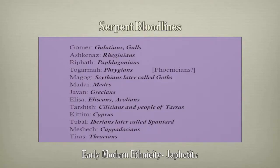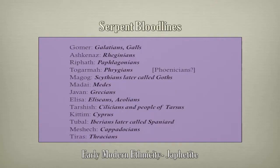In early modern ethnicity, Josephus equated Gomer to the Galatians or Gauls; Ashkenaz to the Virginians; Rephath to the Patagonians; Togarmah to the Phrygians; Magog to the Scythians, later called Goths; Madai to the Medes; Javan to the Grecians; Elisha to the Elysians or Aeolians; Tarshish the Cilicians and people of Tarsus; Chittim the people of Cyprus; Tubal the Iberians, later called Spaniards; Meshach the Cappadocians; and Tiras the Thracians.